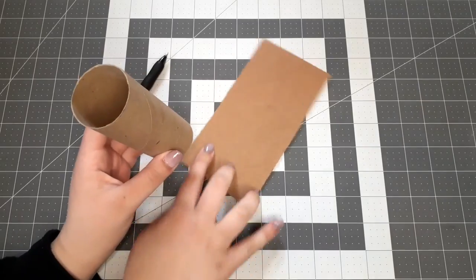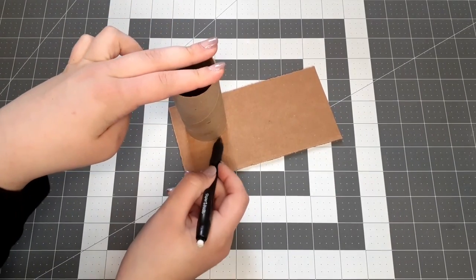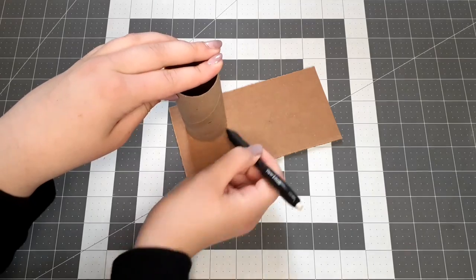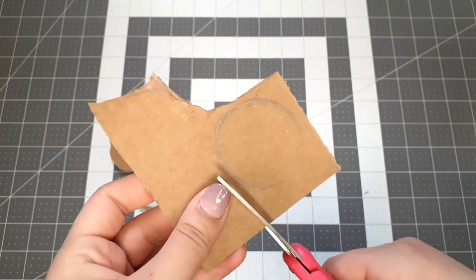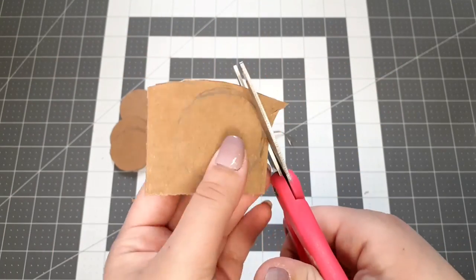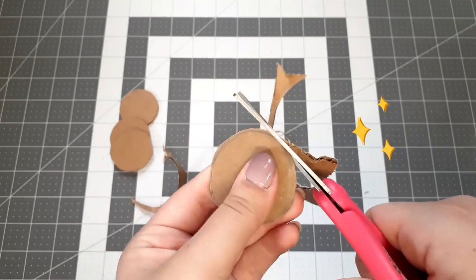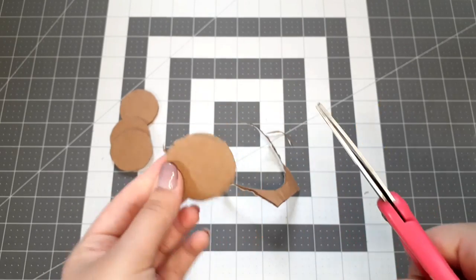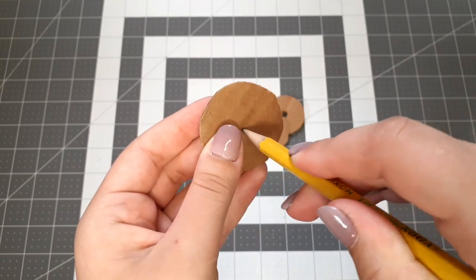First you're going to begin with tracing the end of the toilet paper tube onto the cardboard four times. And then you're going to cut each one of those circles out. Next you're going to use your pencil to pierce a hole through the center of each circle.